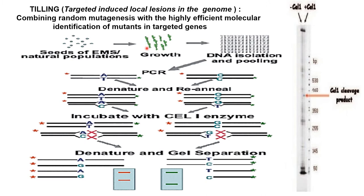We pool all the high-yielding plants or seeds from M1 generation to M2 generation. Later, DNA will be isolated from those plants, pooled together, and amplified through PCR.